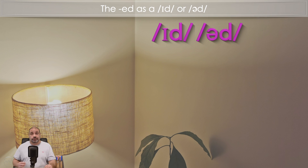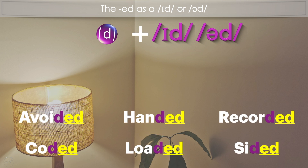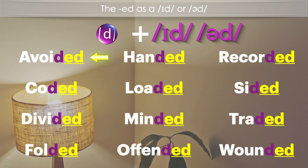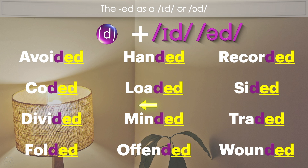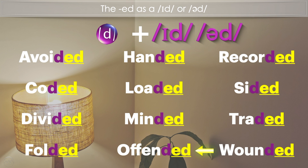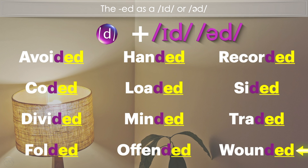Examples of the pronunciation /ɪd/ or /əd/ after a D sound are: 'avoided' or 'avoided,' 'coded' or 'coded,' 'divided' or 'divided,' 'folded' or 'folded,' 'handed' or 'handed,' 'loaded' or 'loaded,' 'minded' or 'minded,' 'offended' or 'offended,' 'recorded' or 'recorded,' 'sided' or 'sided,' 'traded' or 'traded,' 'wounded' or 'wounded.'